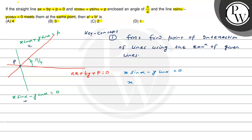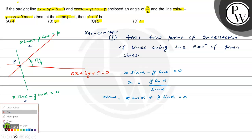From x·sinα minus y·cosα equals 0, we extract the value of x, which gives x equals y·cosα divided by sinα. Now, substituting this value of x into the other line x·cosα plus y·sinα equals p.